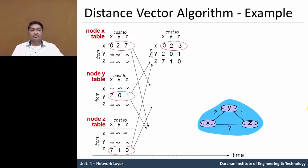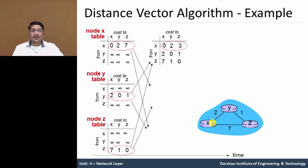In this example network we have three nodes connected to each other with cost values. For node X's table: from x to x the value is zero, x to y is 2, and x to z is 7. So x to x is 0, x to y is 2, x to z is 7. The rest of the fields are infinity.